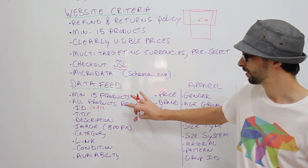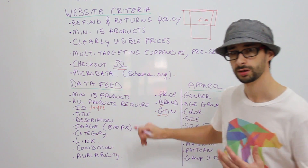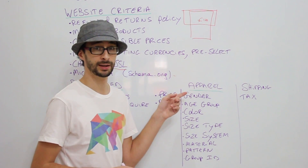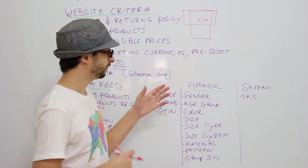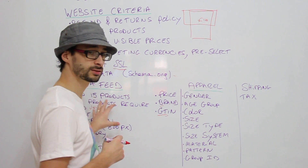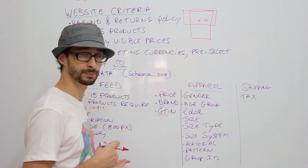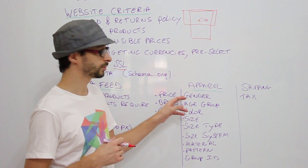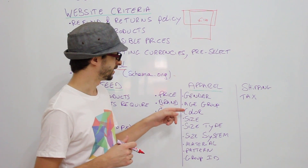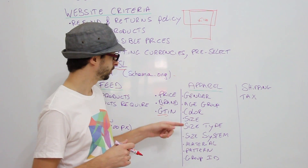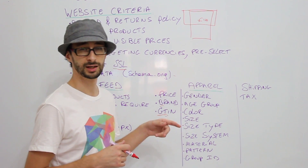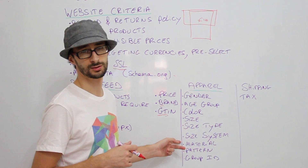Now we're going to talk about apparel. With apparel products, you need the basic product requirements, but also the gender, age group, color, size, size type, and size system. If you're selling clothing, you're probably already familiar with what these are.